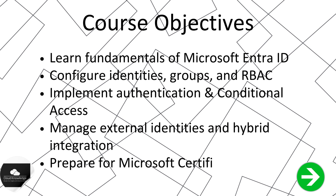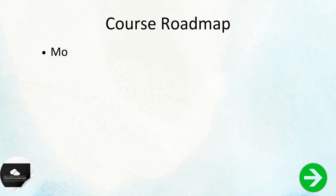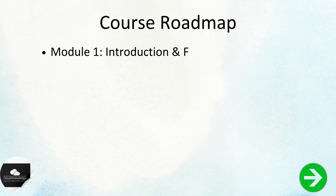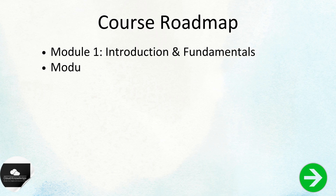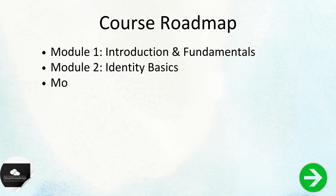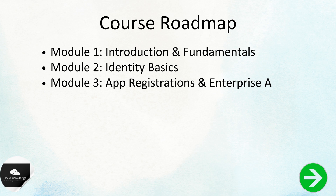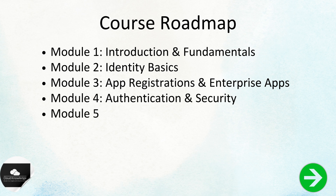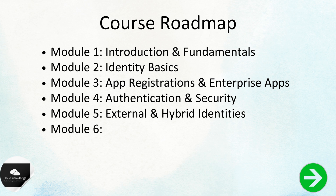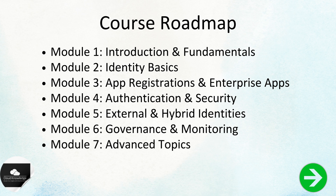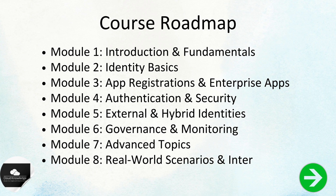By the end of this you will be able to prepare for real-world projects and certifications. The course is structured into eight modules. We will begin with fundamentals, move into identity basics, and then cover app registration and enterprise applications. We will explore authentication and security, external and hybrid identities, governance, and advanced topics like the Microsoft Graph API and PowerShell. Finally, we will wrap up with real-world build scenarios and interview preparations. This roadmap ensures you build your skills step by step.